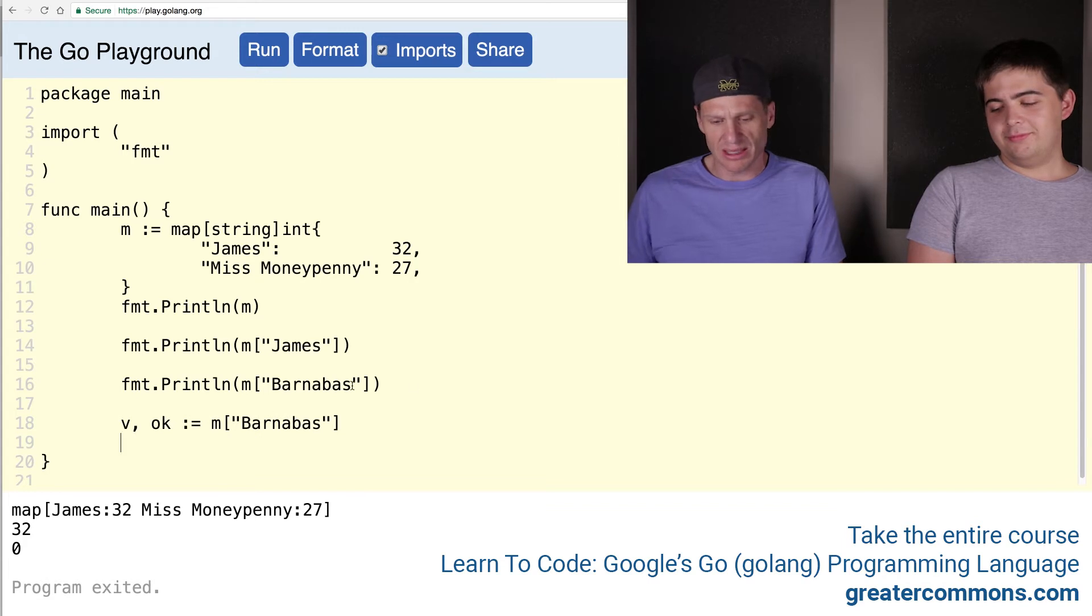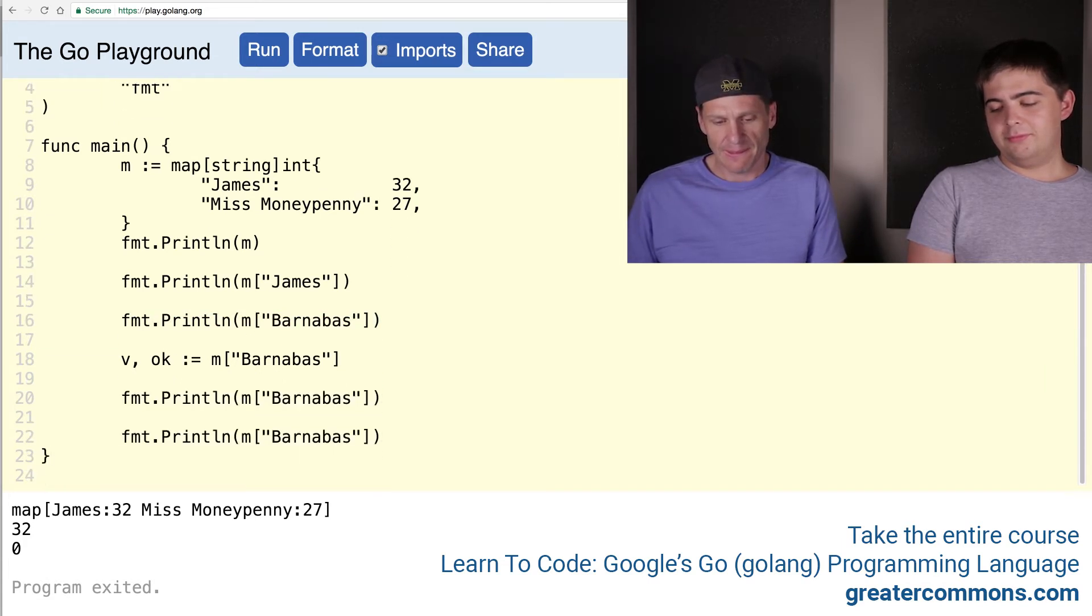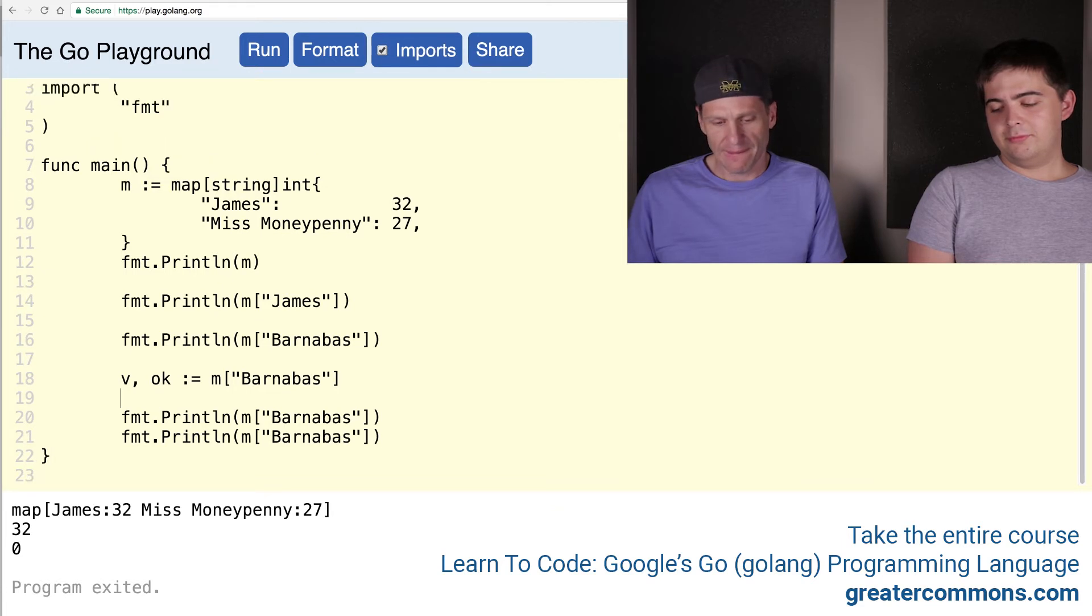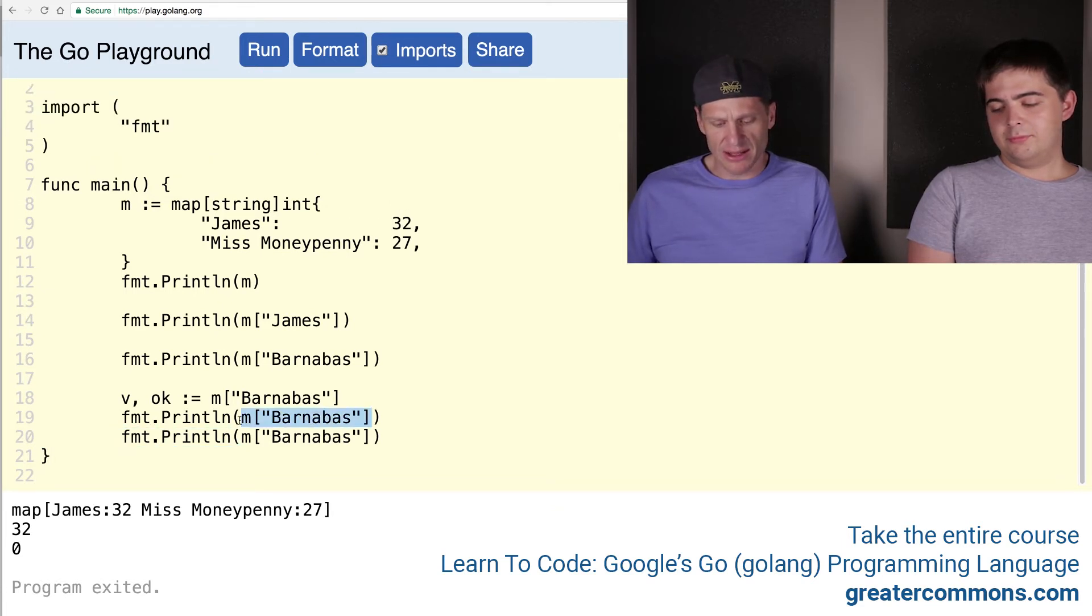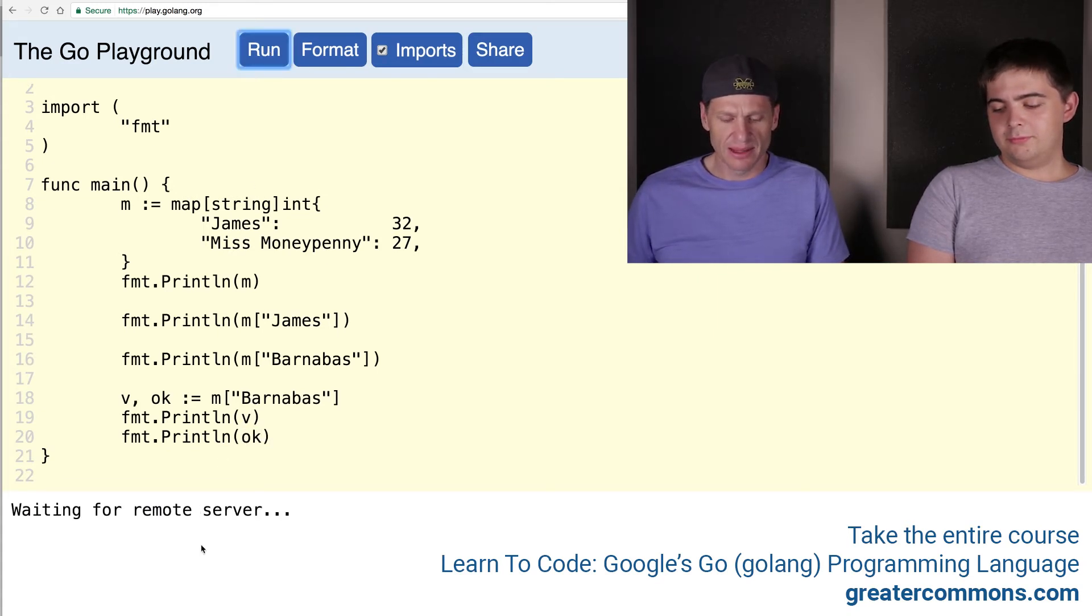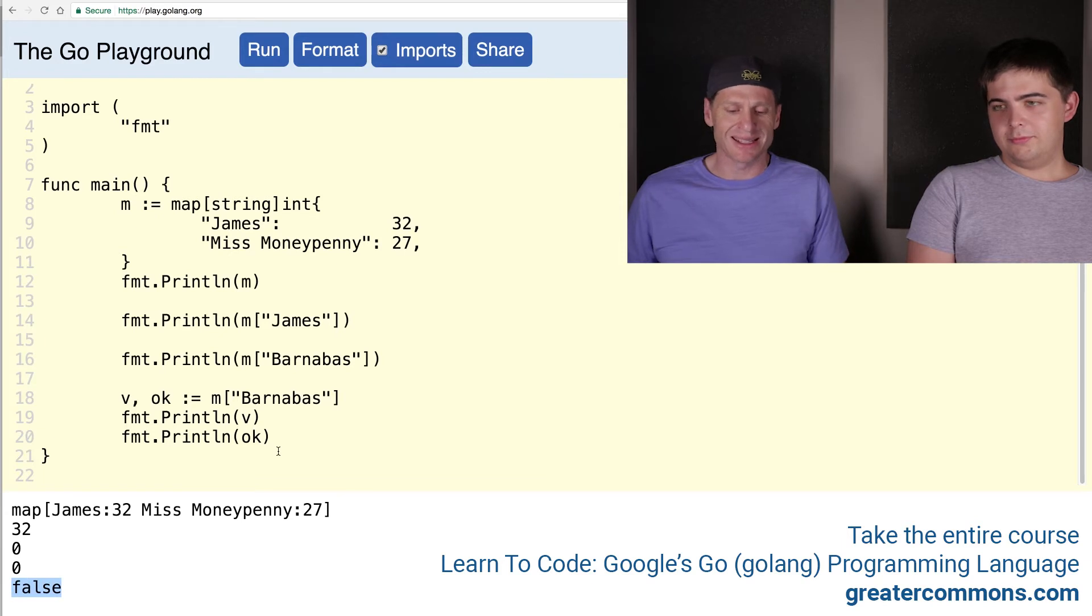And we could do a map Barnabas and we could check it, and now we could print both of those things out. And I'm going to print out the value, and I'm going to print out whether or not it's okay. And so I'm going to run that. And so here the value that came out was zero, right? That was the zero value. And it says false. This does not exist in the map. So that's a way you could check.